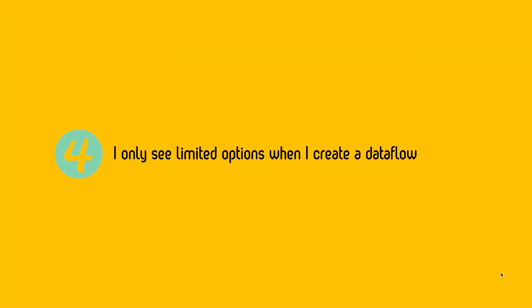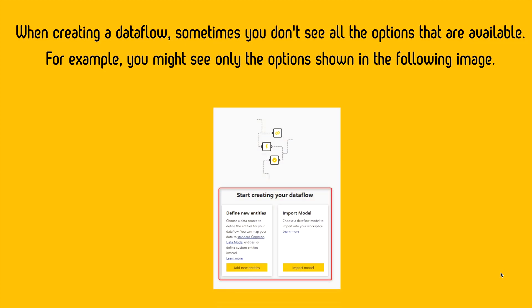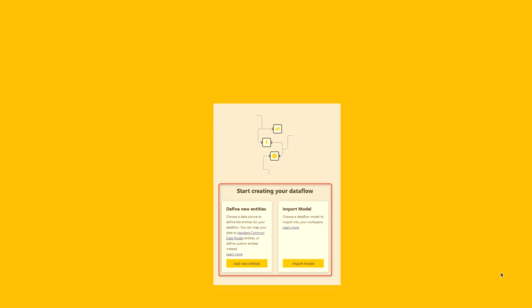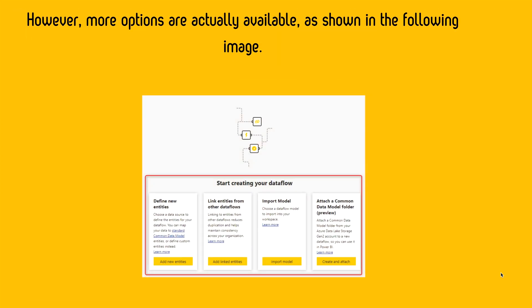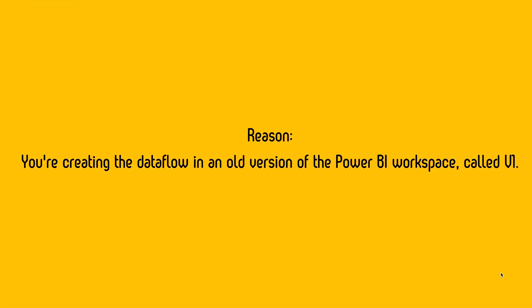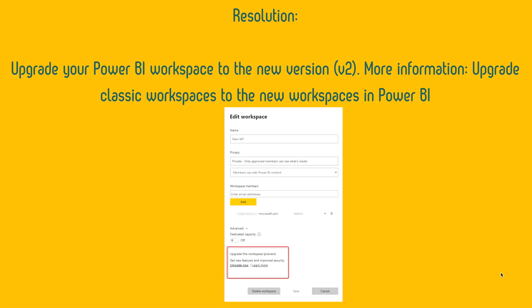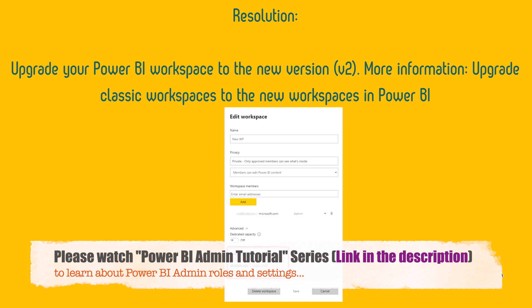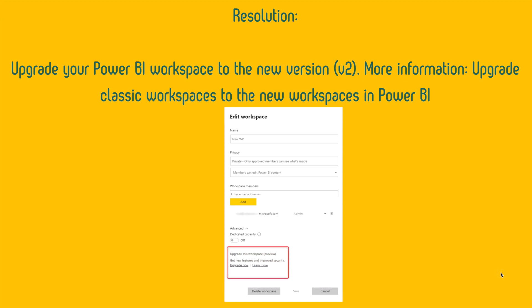Another issue: you only see limited options when creating a data flow, for example only two options instead of many. The main reason is that you are creating the data flow in an old version of the Power BI workspace, also called V1 — the classic workspace. You have to use the modern workspace only. The resolution is to upgrade your Power BI workspace to the new version V2. If you don't know how, check our other videos or ask in the comment section.